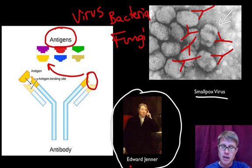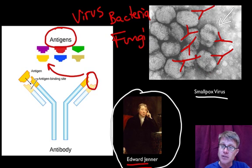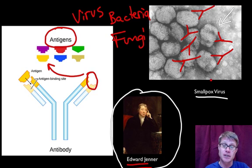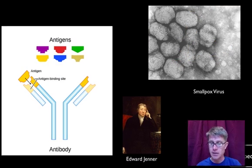So how did Edward Jenner, who inoculated people with cowpox so they couldn't get smallpox, make that work? He wasn't giving them smallpox — he was just giving them cowpox. Well, the cowpox virus had proteins on its surface that looked enough like the smallpox virus that it actually made antibodies and protected against that. The specific response is targeting an invader so that we can never get that same infection again.